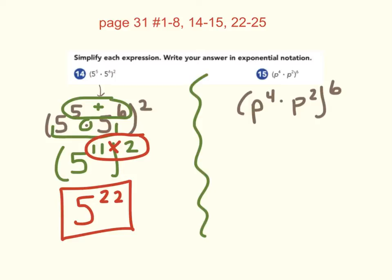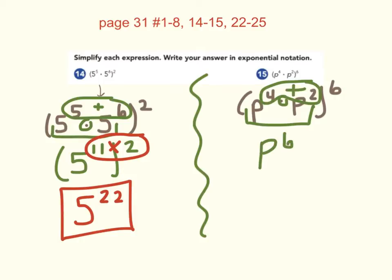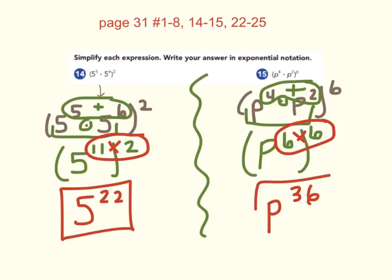Number 15 was the same process. Beginning in the parentheses, p to the 4th and p to the 2nd — the bases are the same and we're multiplying. The product rule says we keep the base and add the exponents, so inside the parentheses we have p to the 6th power. Then bringing down the rest of the problem, we have the power rule — keep the base and multiply the exponents — so the answer is p to the 36th power.